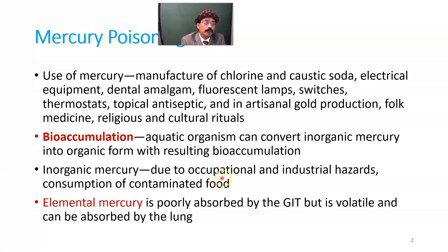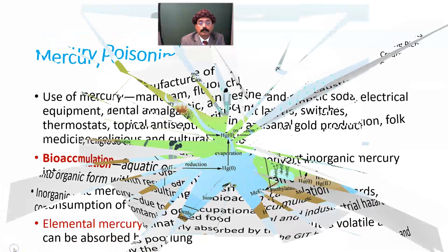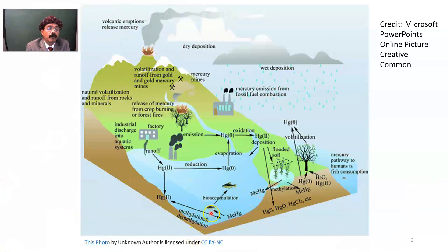Inorganic mercury occurs due to occupational and industrial hazards, and consumption of contaminated food. Elemental mercury is poorly absorbed by the GI tract but is volatile and can be absorbed by the lungs. As shown in this image, small fish are eaten by large fish, which are then eaten by humans and birds. It accumulates in large fish and also in the human body — that is bioaccumulation.